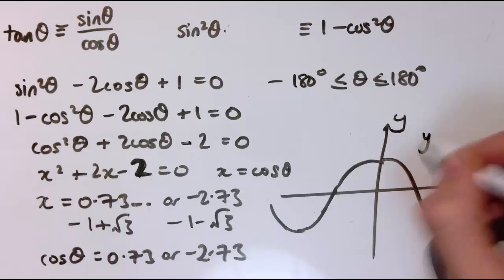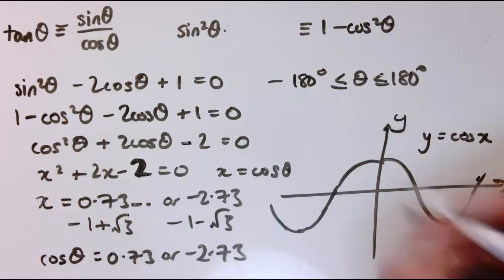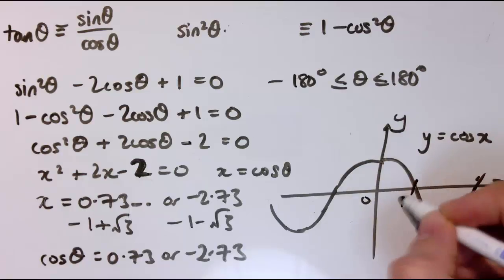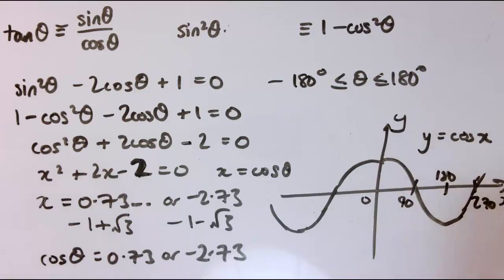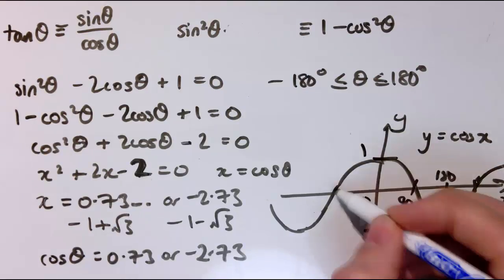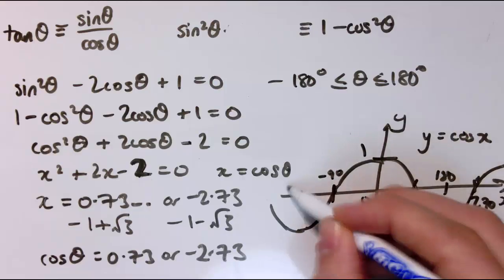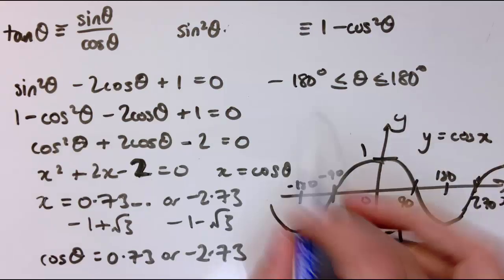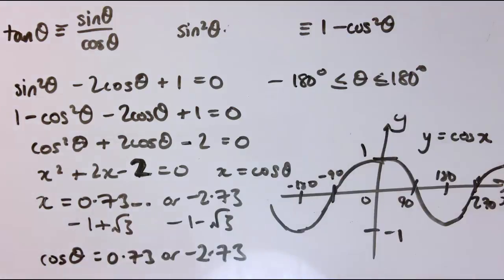Now let's think about the graph of y equals cos x. Now this one repeats every 360 degrees, so this is actually 0, got 90 here, 180, 270, and it would keep, it would go back up to 1 here again and repeat. So this is 1 at the top and minus 1 at the bottom. This is minus 90, minus 180. We're only interested in minus 180 up to 180 here.